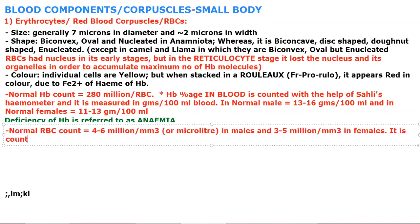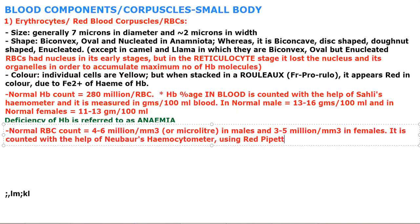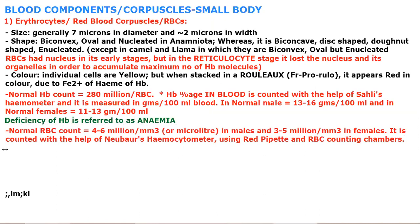RBC count is measured with the help of a hemocytometer — this is also a patented instrument, also called Neubauer's chamber. You use the red pipette and RBC counting chamber, because there is also a chamber for WBCs. So you have to use the red pipette and the RBC counting chamber.